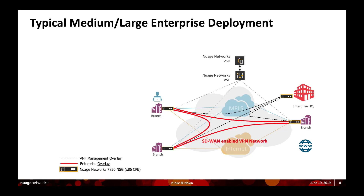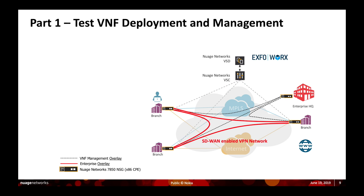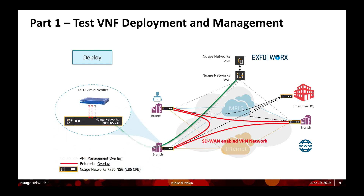A typical large enterprise deployment includes Virtual Verifier on a UCPE device and the ExpoVox dashboard, which is deployed locally. The first step is deploying the Virtual Verifier onto a particular UCPE device. Once deployed, it will be managed by the ExpoVox dashboard, which can be accessed locally.